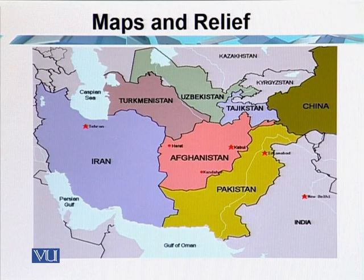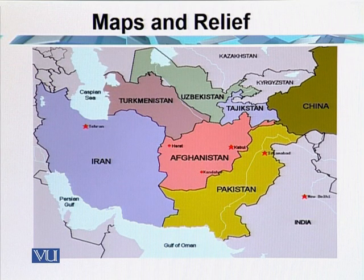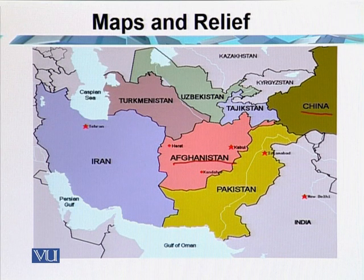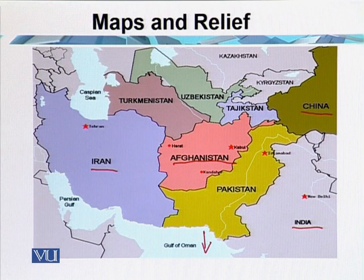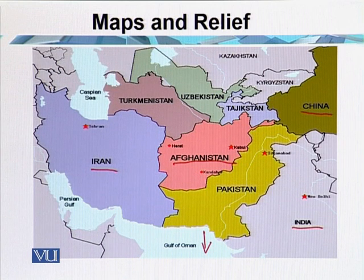This map shows the neighboring countries of Pakistan. You can see that to the north of Pakistan is China, to the west is Afghanistan, to the south is Iran, and the eastern side is covered with Indian territory. The south also borders the Gulf of Oman, called the Arabian Sea, which is part of the Indian Ocean. Through mapping we can see a lot of information on one page.